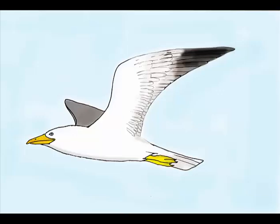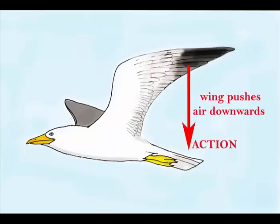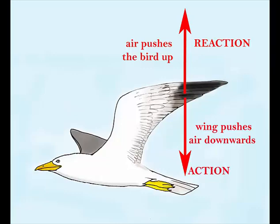Let's see another example. A bird flies in the air. How does it get lift? Part of the reason is that when the wings of the bird push air downwards, which is the action, air pushes the bird up, which is the reaction. So in this way, in this case the seagull is able to fly and not fall down or get pushed up too high.